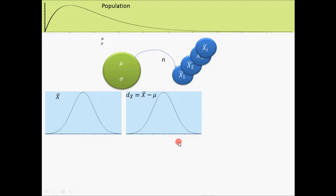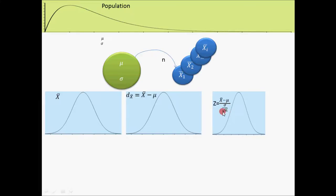Now let's think about what would be the shape of this distribution. To understand that, let's do another change. If we divide the deviation of each sample mean from the mean of the population by the standard deviation of the population divided by square root of n, this standard deviation of the population divided by square root of n is another constant. So basically we are scaling, but the shape of the graph will not change. With these two transformations that we did, we shifted the location of the concentration of this distribution and we scaled it. By that we get another variable — let's call it z. Now we can study the distribution of this z and it turns out that we will have very interesting findings.